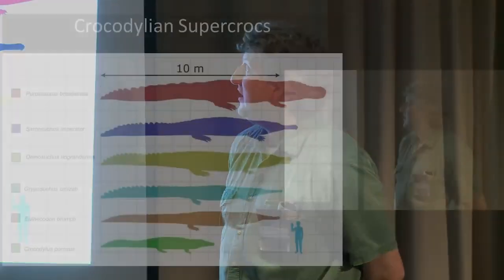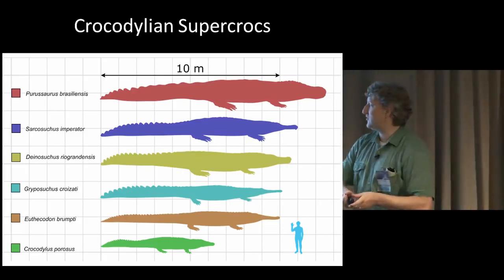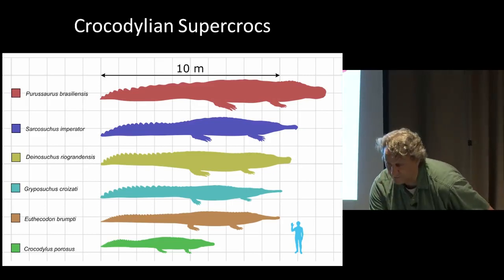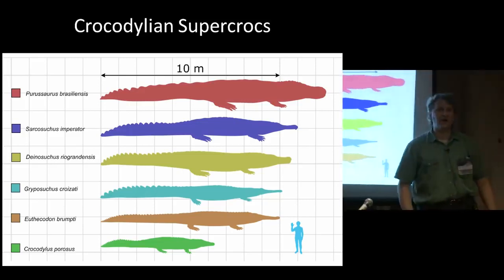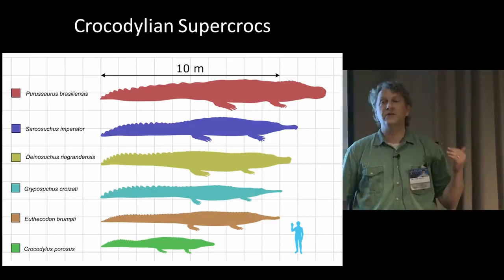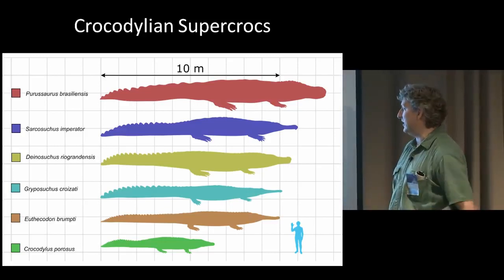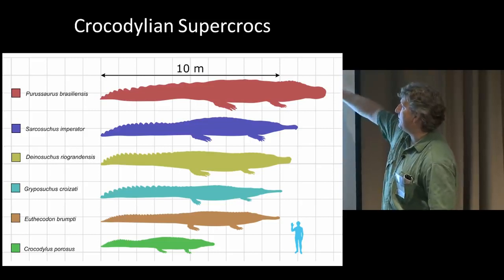In the Eocene, temperatures were about as warm as in the Mesozoic - the mid-Eocene is the hottest time since the end of the age of dinosaurs - and it's probably not a coincidence that we get giant snakes, crocodiles, and turtles then. Here are super crocs: Sarcosuchus and Deinosuchus are contemporaries of giant dinosaurs, but the rest are Cenozoic forms. Crocodylus porosus, the saltwater crocodile of Australia, is the largest living crocodilian, but there were several other very giant forms including Purussaurus, probably the largest crocodilian in Earth history.